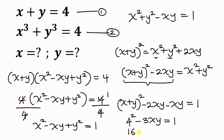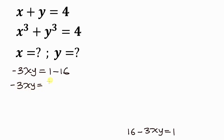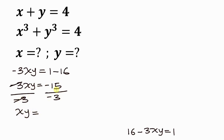From equation 1, x plus y is 4, so we substitute: 4 squared minus 2xy minus xy equals 1. That gives 16 minus 3xy equals 1. Moving 16 to the right: minus 3xy equals 1 minus 16, which is minus 15. Dividing both sides by minus 3 gives xy equal to 5. So the product of x and y is 5.